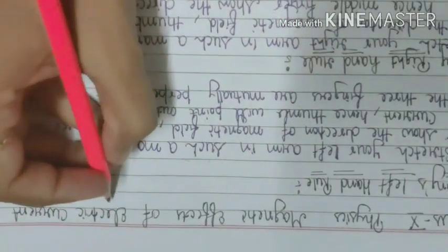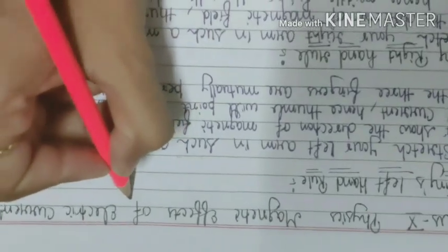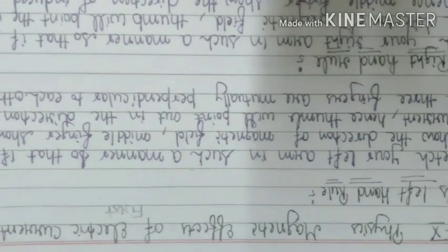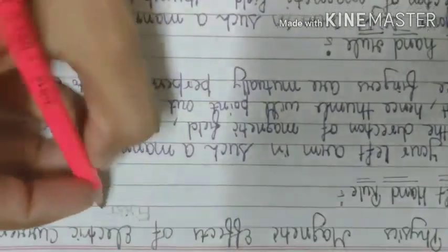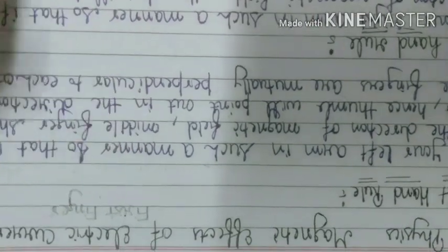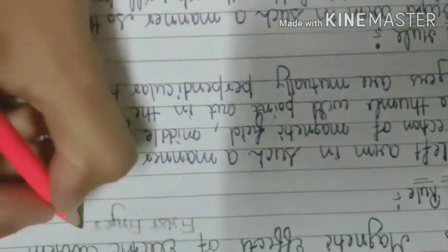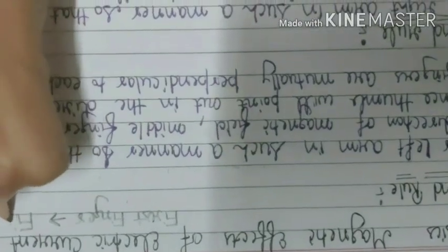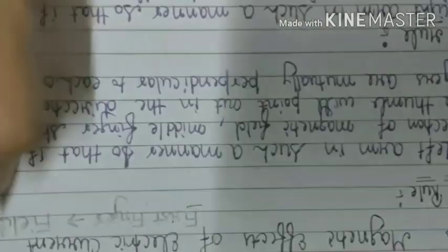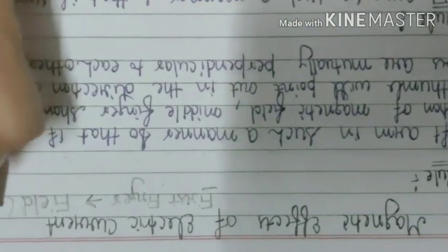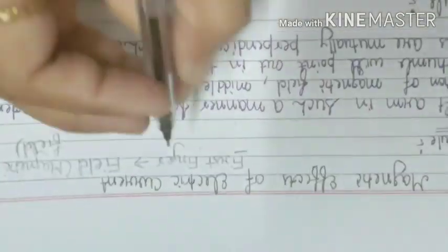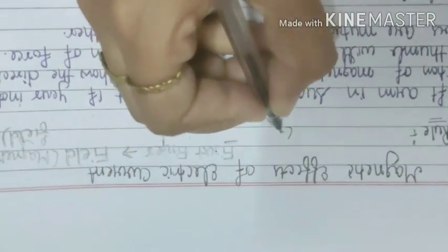Students, let's also represent this with a memory trick. The first finger — what does it represent? Field. So if we are talking about field, it is the magnetic field. And our central finger — what does it represent?